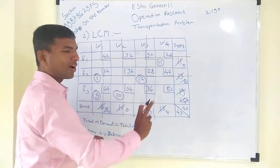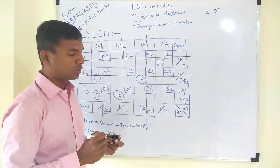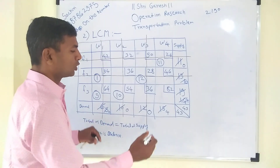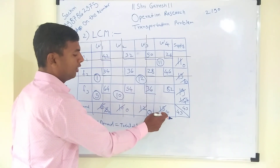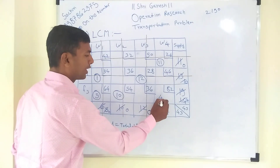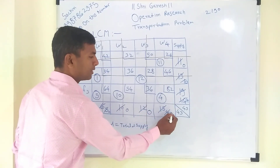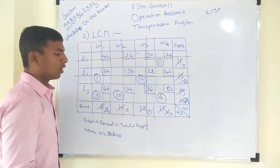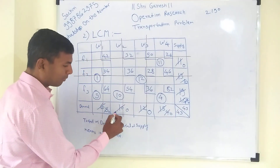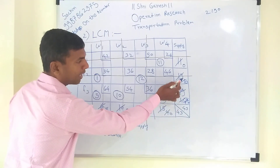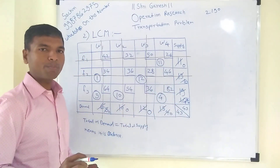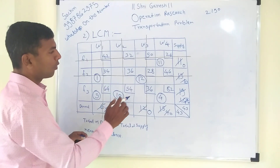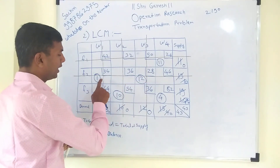Only one cell remains with cost 82. There is no need to look for the smallest — just allocate directly. The demand is 4 and supply is 4, so we allocate 4. Both become zero. We now verify that all demands and all supplies have become zero, confirming the allocations are done correctly. We have a total of six allocations.